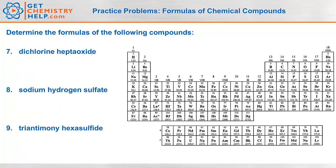Dichlorine heptoxide. 'Di' means 2, so 2 chlorines. 'Hepta' is 7, so 7 oxygens. The formula is Cl₂O₇.